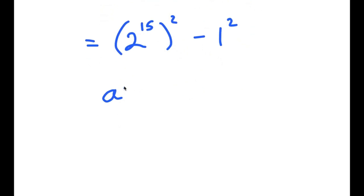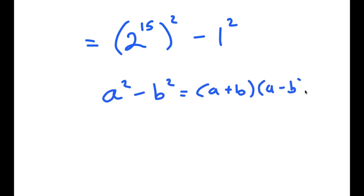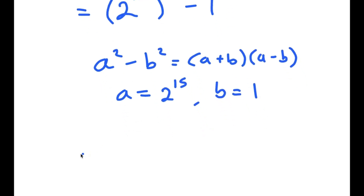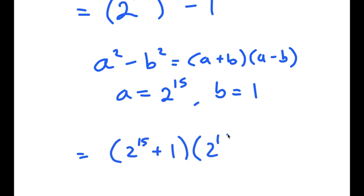Now, if I have something of the form a squared minus b squared, this equals a plus b times a minus b. In this case, a is 2 to the power of 15 and b is 1. So I get 2 to the power of 15 plus 1 times 2 to the power of 15 minus 1.